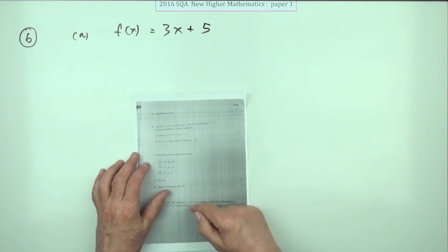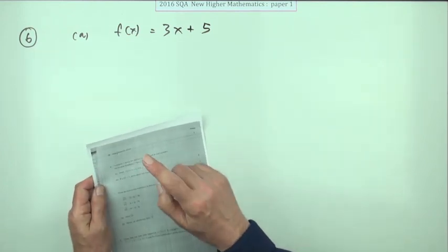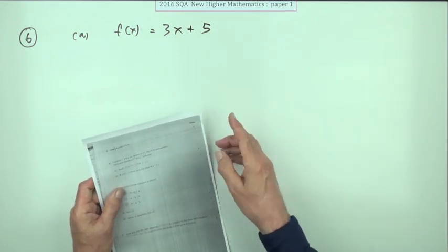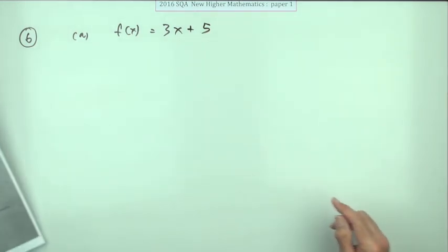Number six: inverses of functions for four marks. I haven't asked anything about inverses for a long time, it's about time they did, so that's quite good. It gives you this for f of g, and for three marks it wants the inverse function.